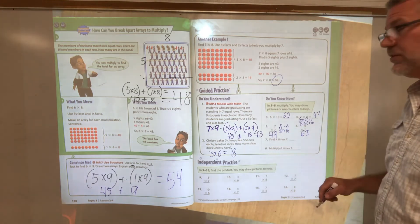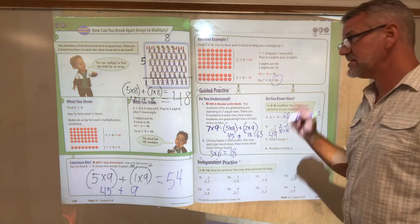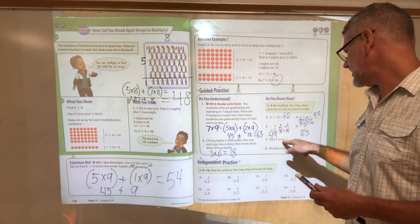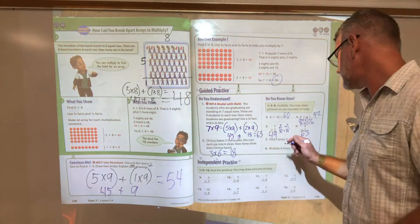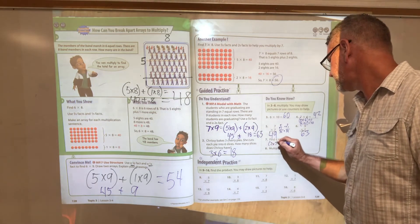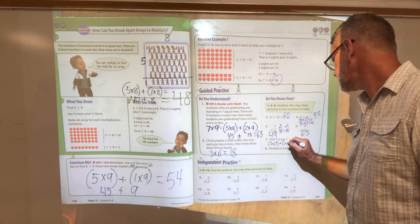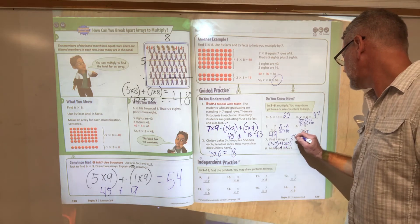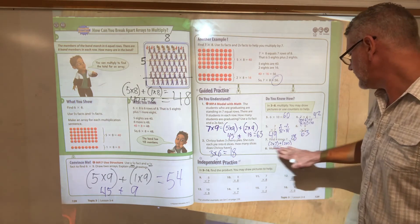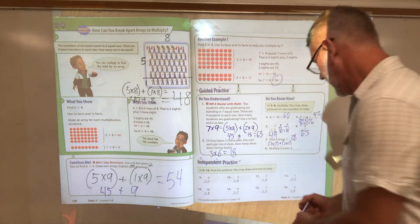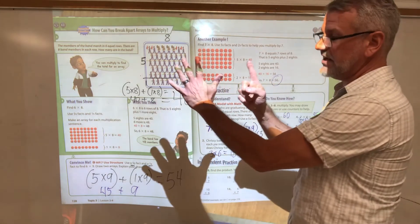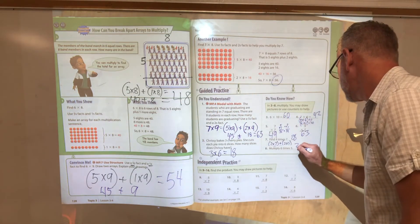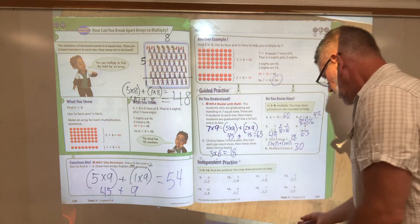Nine times seven, we did that right here. It's sixty-three. Find four times seven. Let's go back to what we did on the last lesson. We just doubled. So we had two times seven plus two times seven. Fourteen plus fourteen, that's going to give us twenty-eight. Then multiply six times five. I am just going to use my fingers and count: five, ten, fifteen, twenty, twenty-five, thirty.